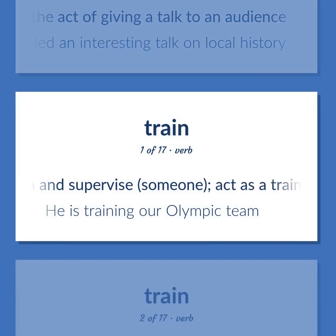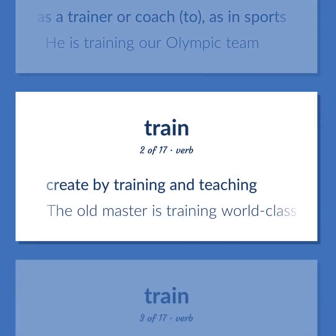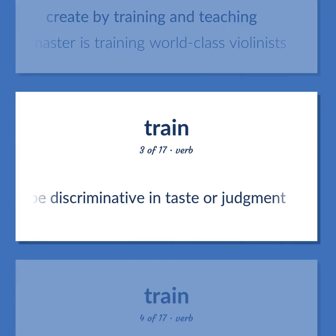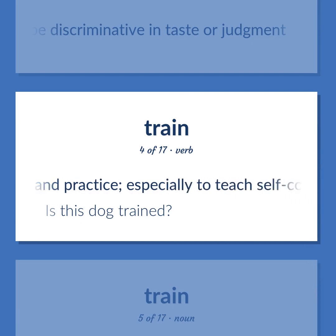Train: Teach and supervise someone; act as a trainer or coach, as in sports. He is training our Olympic team. Create by training and teaching. The old master is training world-class violinists. Teach or refine to be discriminative in taste or judgment. Develop a child's or animal's behavior by instruction and practice, especially to teach self-control. Is this dog trained?